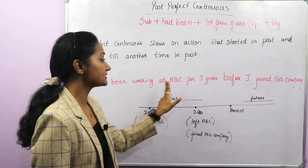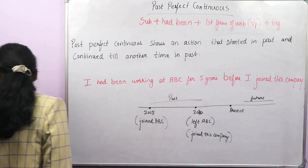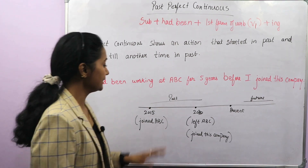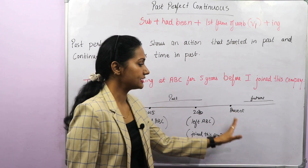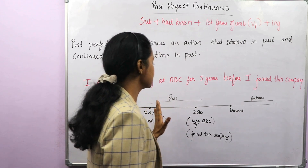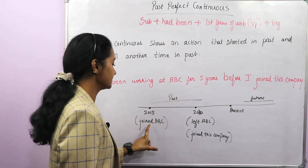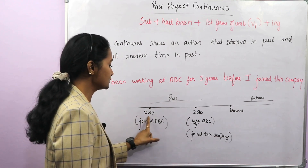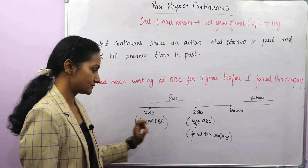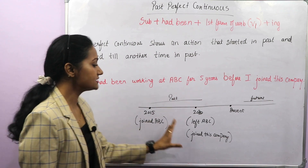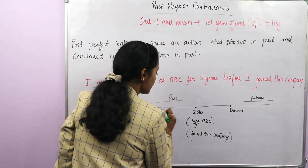I had been working at ABC for five years before I joined this company. Let's understand this on a timeline. This is present right now. Anything after present is future. Anything before present is past. Now just imagine that I started to work with ABC in 2015 — I joined ABC in 2015 — and I left this company in 2020. So there is a duration of five years.